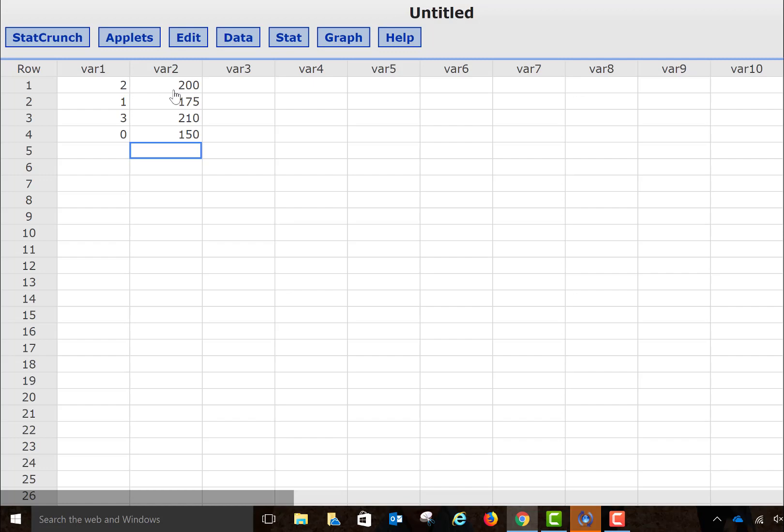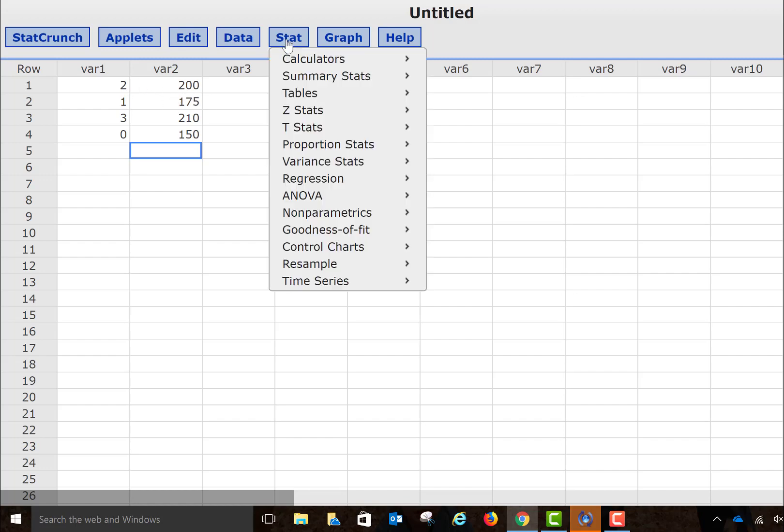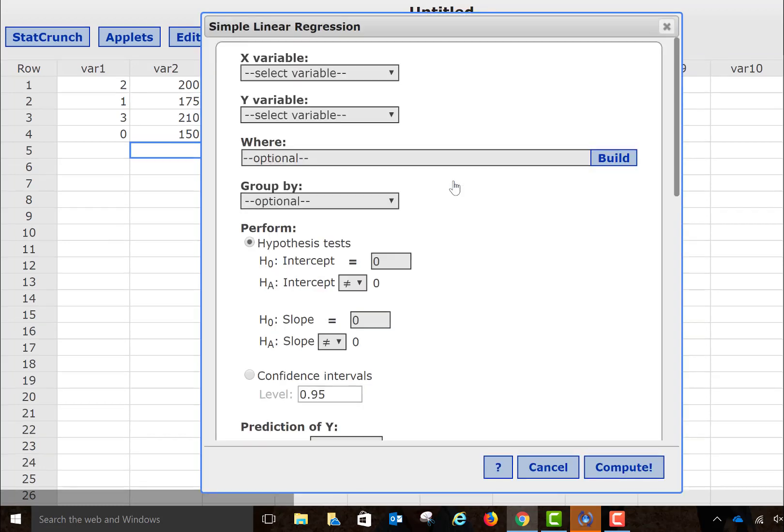Now, if we want to test for correlation using the p-value method, again, we need to have our data entered into StatCrunch, and this time, I'm going to go to the stat menu, but now, in order to do the p-value method, because it's involved with a full hypothesis test, I'm going to go down to regression, and then simple linear.